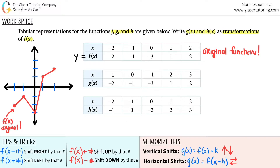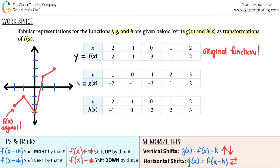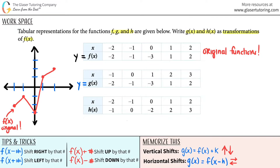Now let's do the g of x graph and see how it looks similar. I'm going to do this one in blue. Just know that this is the same thing as y — any letter and then of x. So g of x, h of x, f of x — they're all equal to a y value. So I have five points here that I can plug in.